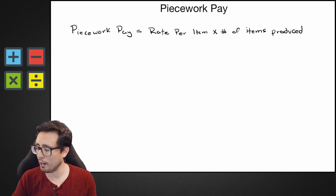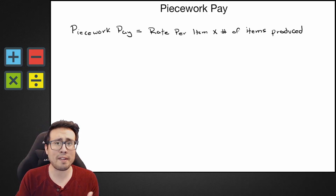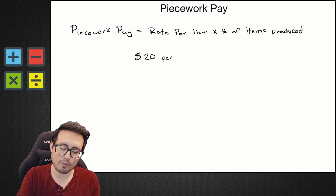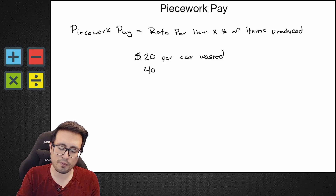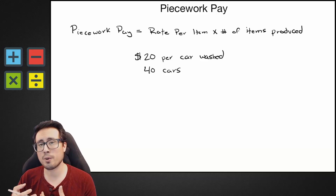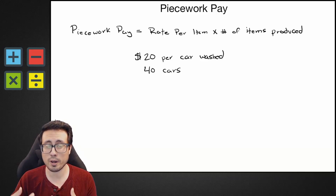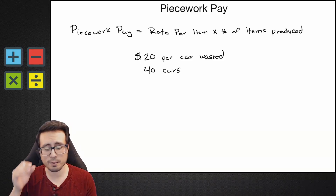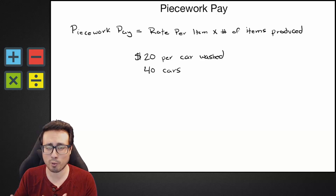Let's take a look at an example. Let's say we have a business washing cars. We make $20 per car washed, and this week I washed 40 cars. What I want to know is what is my piecework pay going to be? Taxes and deductions still have to get subtracted, but what is my piecework pay in terms of gross pay?